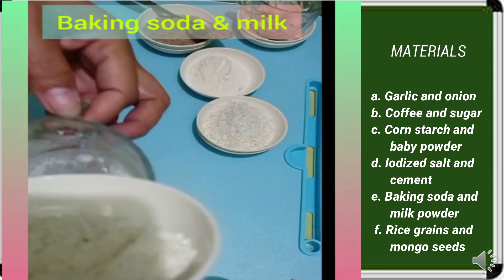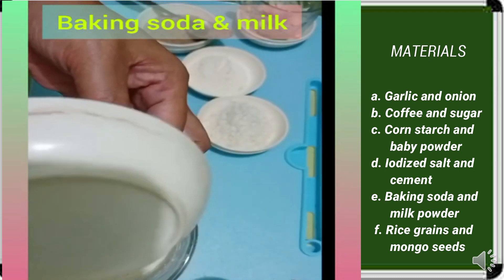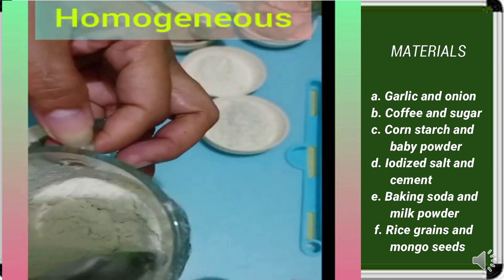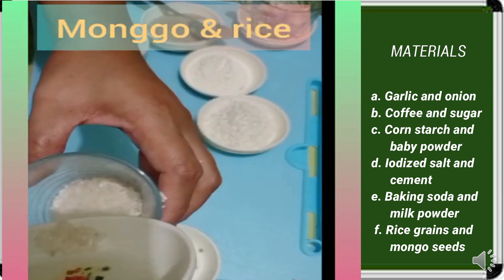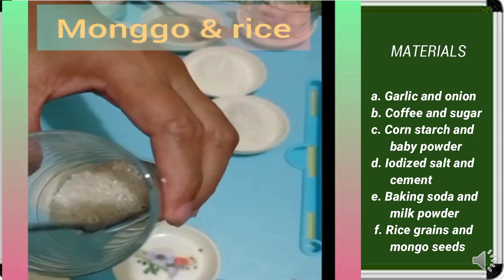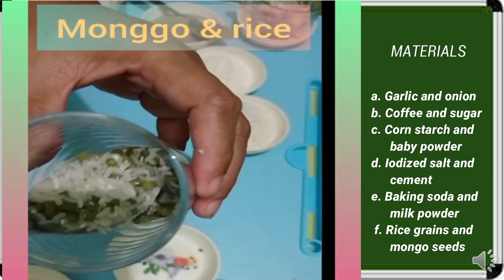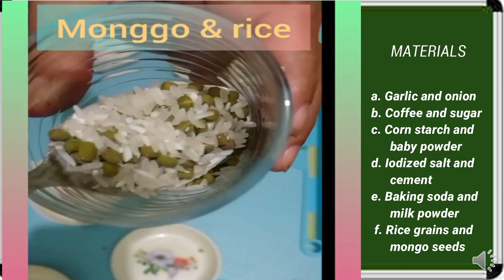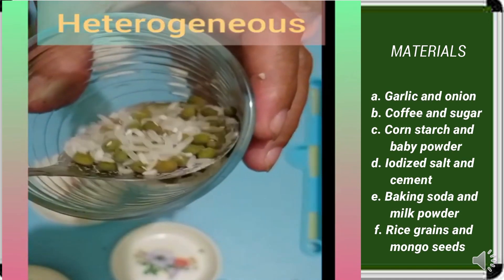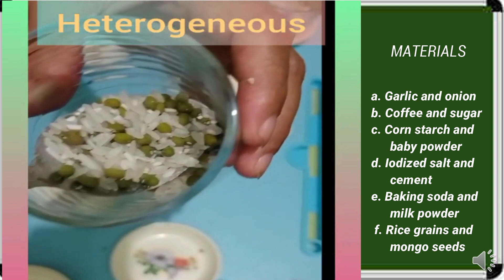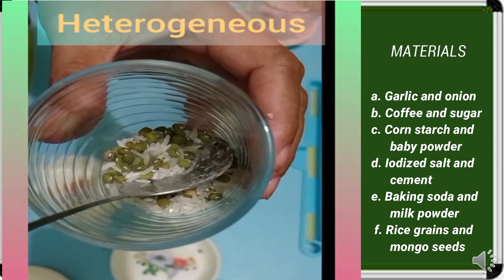Next is baking soda and milk powder. When we mix baking soda and milk powder, we cannot distinguish baking soda from milk powder. That's why we call this mixture a homogeneous mixture. The last one is rice grains and mongo seeds. When we mix mongo seeds and rice grains, we can still distinguish rice grains from mongo seeds. That's why we call this a heterogeneous mixture. If the solid materials in a mixture remain visible and distinguishable from one another, it is called a heterogeneous mixture.